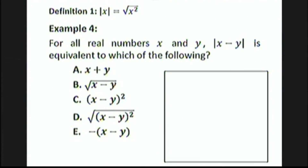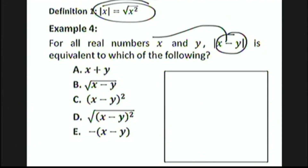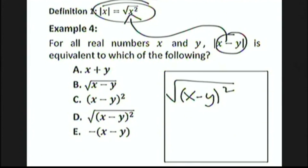For all real numbers x and y, the absolute value of x minus y is equivalent to which of the following? We're going to use the first definition — the square root definition — to get square roots into this problem, by substituting x minus y in for x. So replacing x by x minus y, we get the square root of (x minus y) squared, which is precisely choice D.